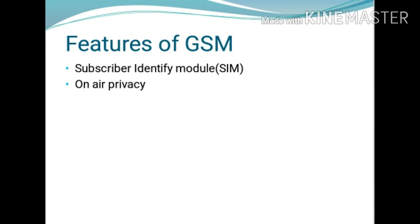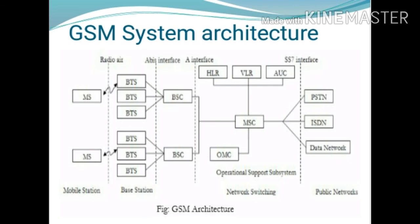In analog communication systems, calls are easily monitored by other users, so GSM encryption is useful. In GSM, privacy is possible because every transmitter uses an encryption algorithm that converts the original data into a digital stream, which is then transmitted to the user using a key known only to the receiver. Next is the GSM system architecture.